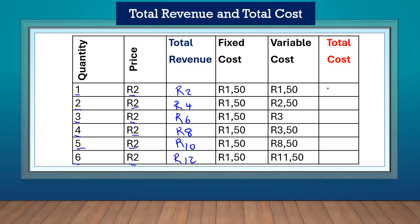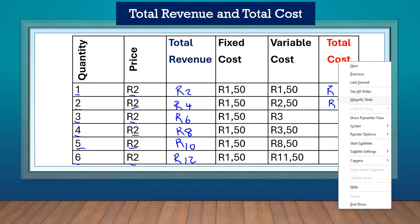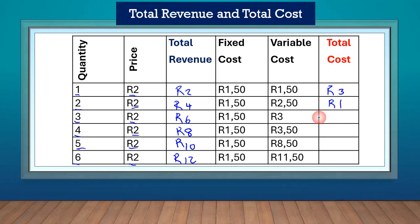One fifty plus one fifty is three rands. One fifty plus two fifty is four rands. One fifty plus three rands is four rands fifty. One fifty plus three fifty is five rands. One fifty plus eight fifty is ten rands. One fifty plus eleven fifty is thirteen rands.